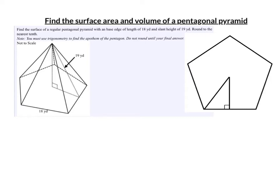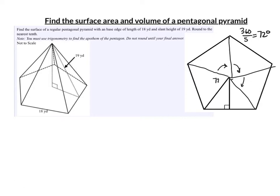This is a regular pentagon, and if we look at all these triangles inside, all those triangles are the same. Each of those angles is the same, and there are going to be five of them as I go around. 360 divided by five gives us an angle of 72 degrees. So this angle is 72 degrees, which means each half is 36 degrees.